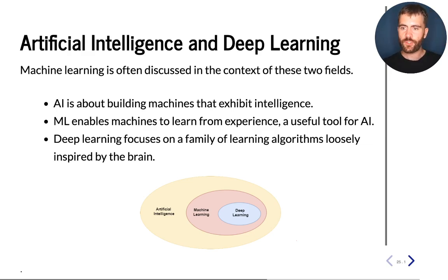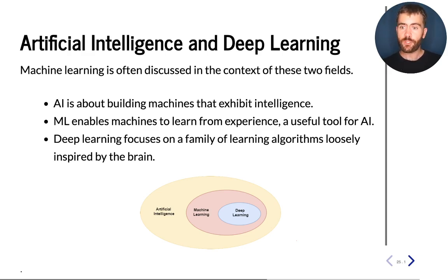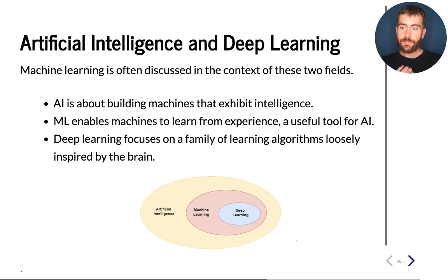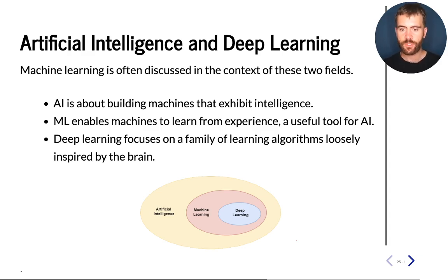Machine learning is a feature of an intelligent system, but not the only one — for example, logical reasoning may not be tied to learning. Machine learning is nonetheless considered a very important tool towards building artificial intelligence systems and the most promising approach towards achieving that long-term goal. Deep learning is a subset of machine learning which focuses on a particular type of model called a neural network, loosely inspired by how the brain works. These models are very successful today, solving important problems like image recognition, speech recognition, and machine translation, achieving really impressive results.